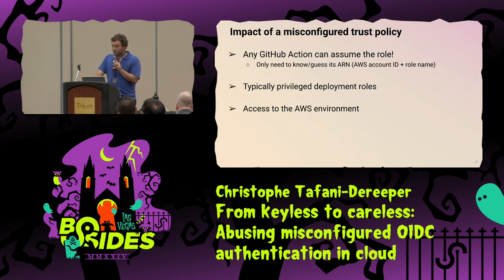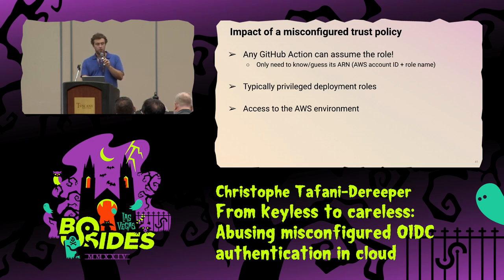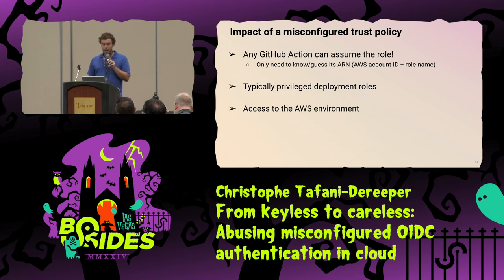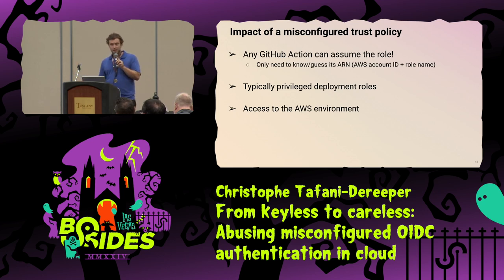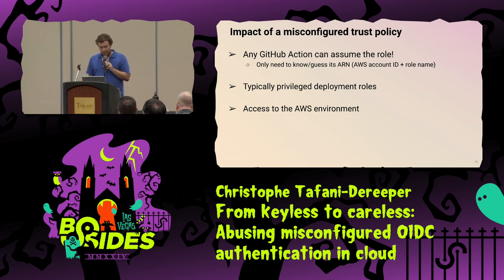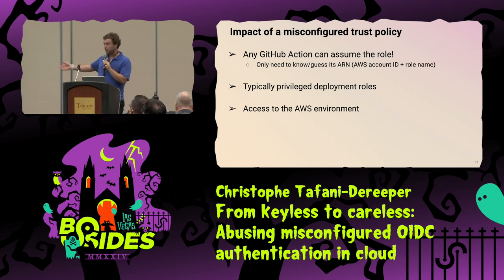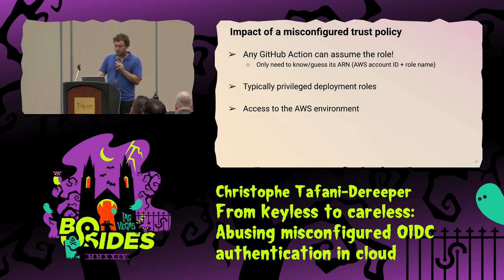If you have a vulnerable trust policy, it means any GitHub Action in the world can assume your role. CI/CD roles tend to be privileged — at least mine are. If I'm able to assume this role, I get the credentials and can directly access the AWS environment.